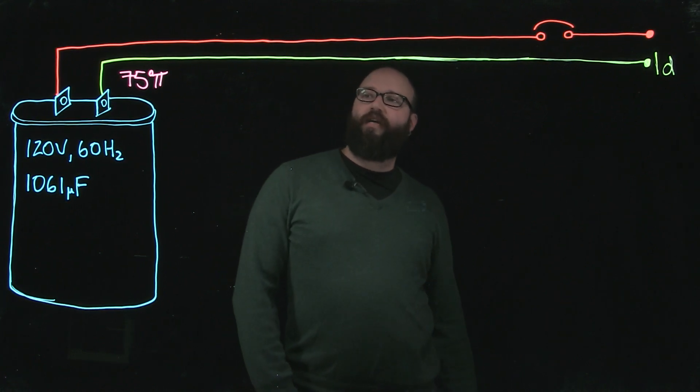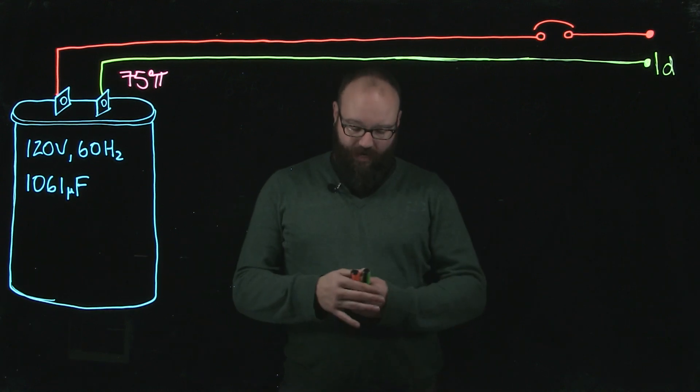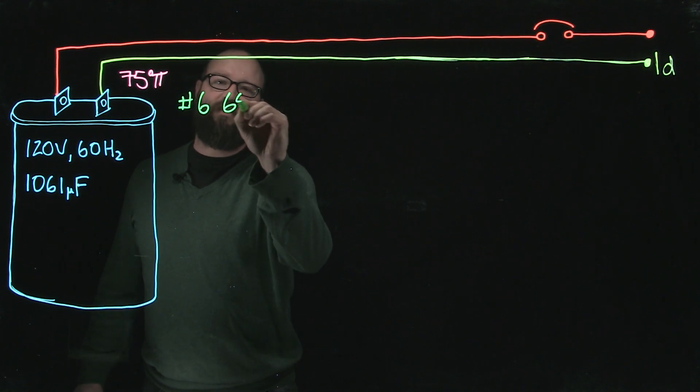In the previous video we discussed how to find the conductor size for this capacitor, and it turns out that it was a number 6, good for 65 amps.